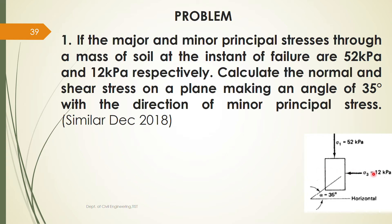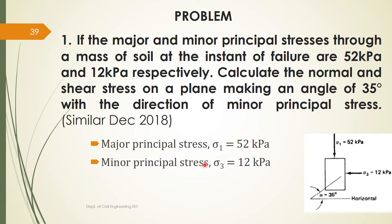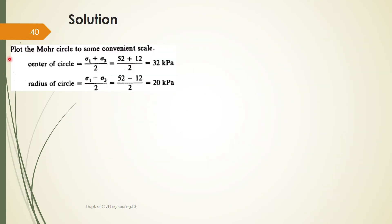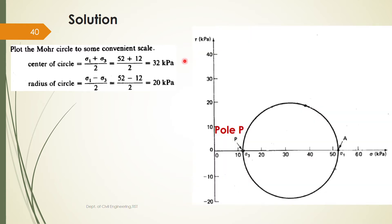We are going to find the σ and τ values on the plane which is at an angle of 35 degrees with the horizontal. The given values are: major principal stress σ₁ = 52 kPa and minor principal stress σ₃ = 12 kPa. We will construct a Mohr circle and find the σ and τ values. On the horizontal axis you have sigma values and on the vertical axis you have tau values.